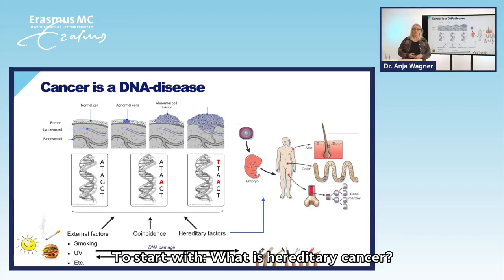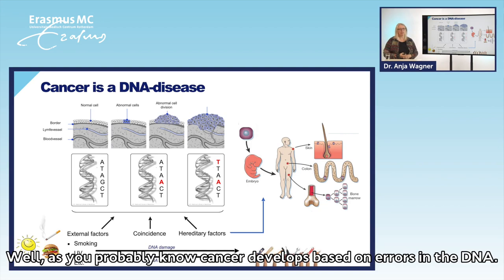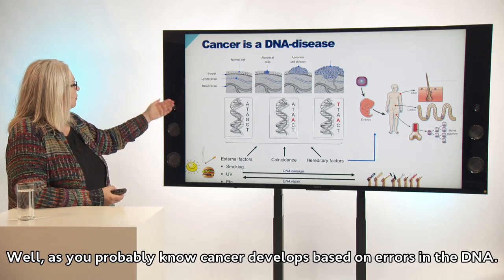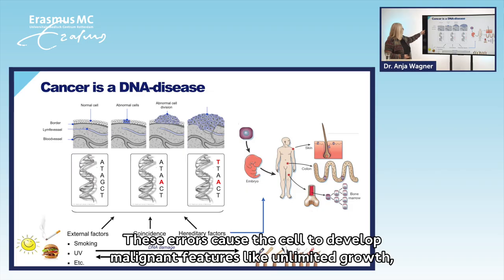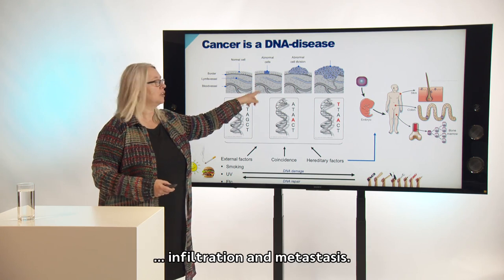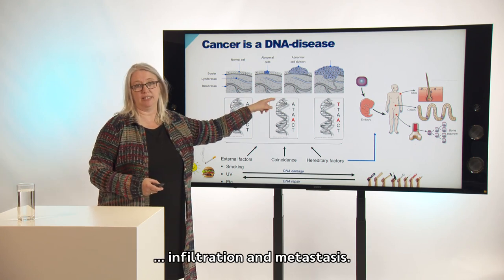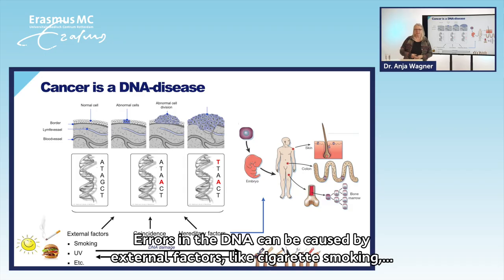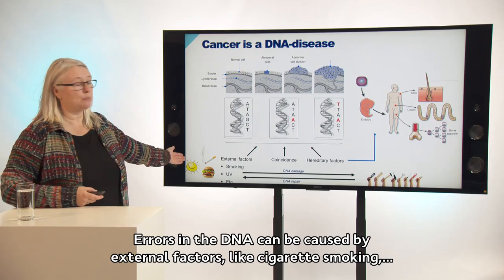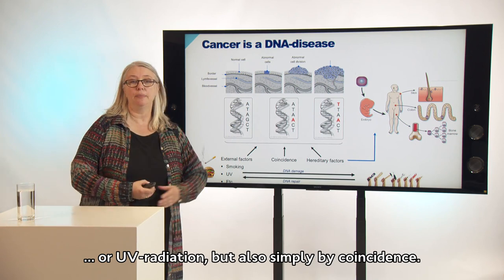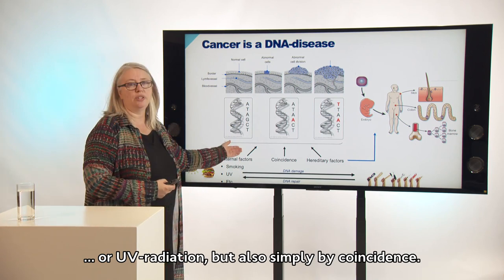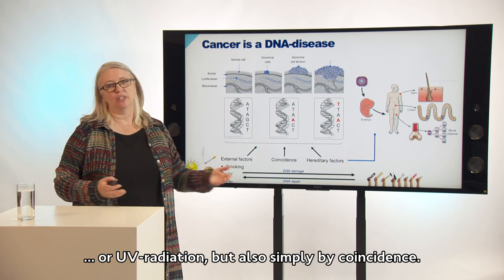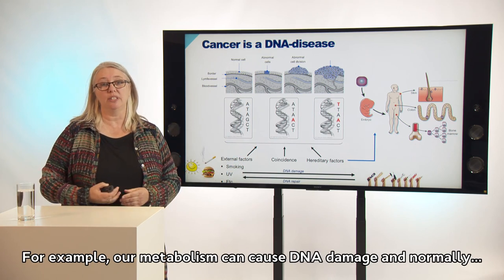To start with, what is hereditary cancer? As you probably know, cancer develops based on errors in the DNA. These errors cause the cell to develop malignant features like unlimited growth, infiltration and metastasis. Errors in the DNA can be caused by external factors like cigarette smoking or UV radiation, but also simply by coincidence. For example, our metabolism can cause DNA damage.